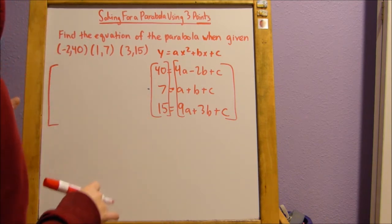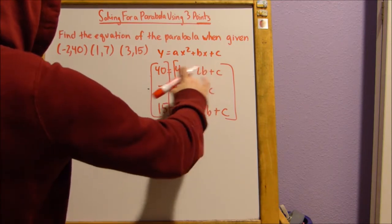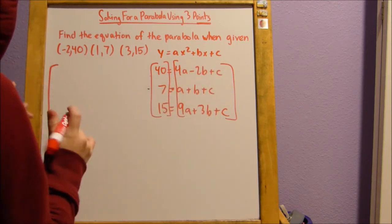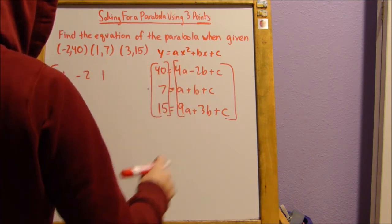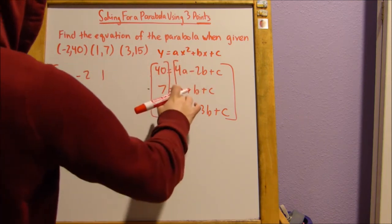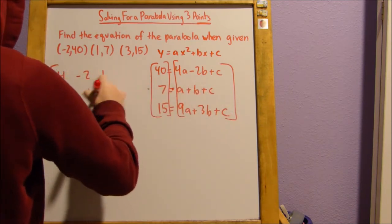So we use the coefficients of the equations. We don't use the exact equations. So here the coefficients are 4, negative 2, and 1. And then the coefficients for this equation are 1, 1, and 1.